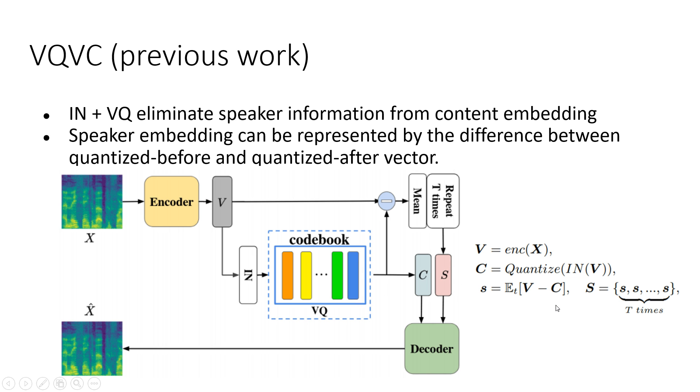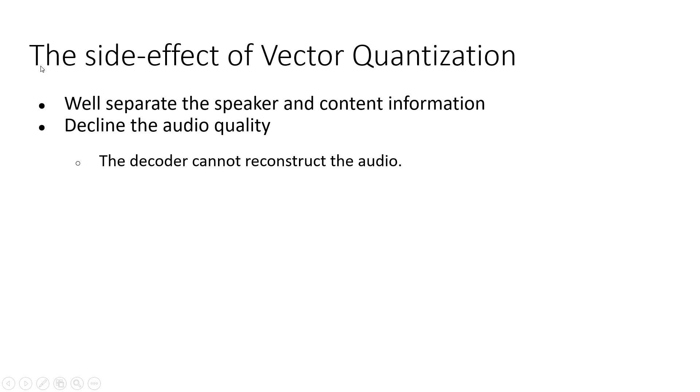This architecture can fulfill voice conversion, however the sound quality of converted utterances seems not good. We think this is a side effect of vector quantization. Vector quantization can well separate the speaker and content information, however it declines the audio quality. This also means that the decoder cannot reconstruct the original audio well.